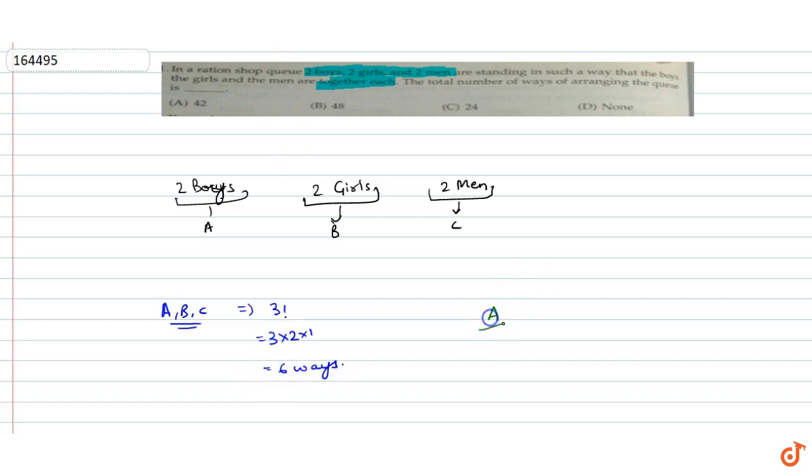Separately, if we look at A, we have two boys. So these two boys can be arranged in 2 factorial ways. That is 2 × 1, which is 2.